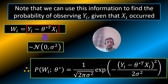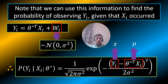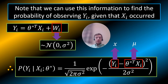So the probability of wi given theta star, substituting wi for yi minus theta star transpose times xi, can be thought of as the probability of yi given xi with parameters theta star. Yi is the value on the probability curve — the bell-shaped normal distribution — and the mean is theta star transpose times xi, with standard deviation sigma.